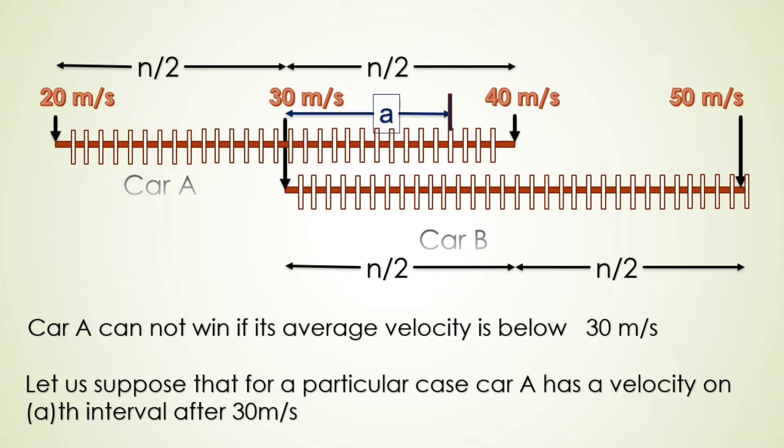Now let us suppose that average velocity of Car A is somewhere between 30 to 40. Then there are only a finite number of intervals. If it is 'a' intervals more than 30 m/s, then only 'a' intervals are possible for Car B such that Car A can win, because for the winning of Car A, speed of Car B should be less than the speed of Car A.